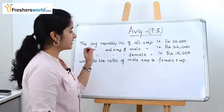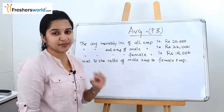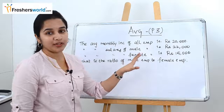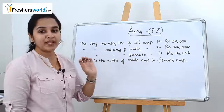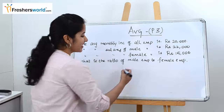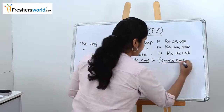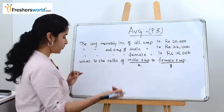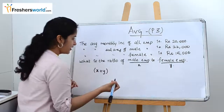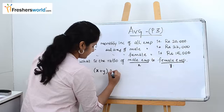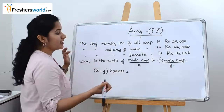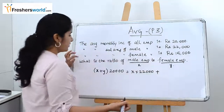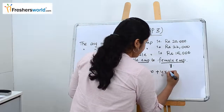The next question: the average monthly income of all employees in a particular company is 20,000. The average salary of the male employee is 22,000 and that of the female employee is 15,000. What is the ratio of male employees to female employees? Let's consider male employees as x and female employees as y and form an equation in the usual way.